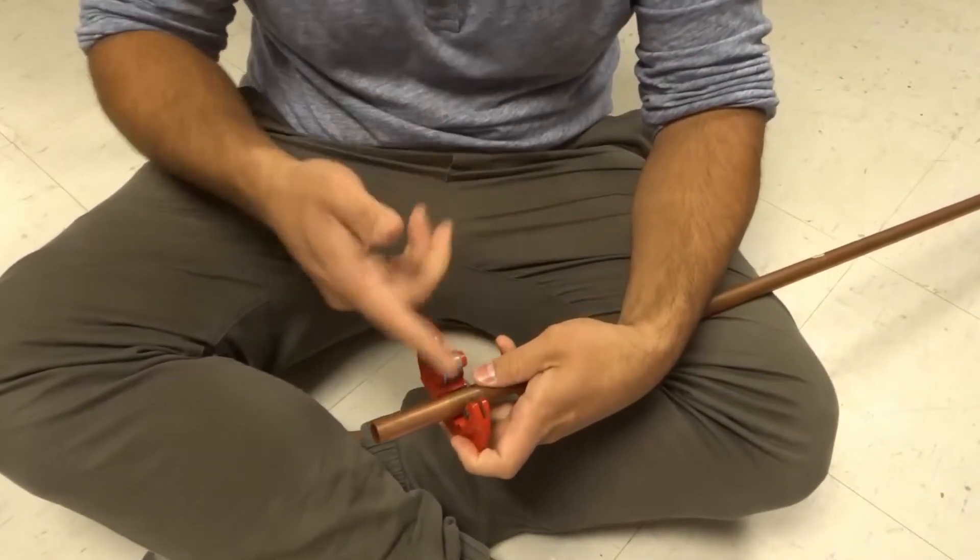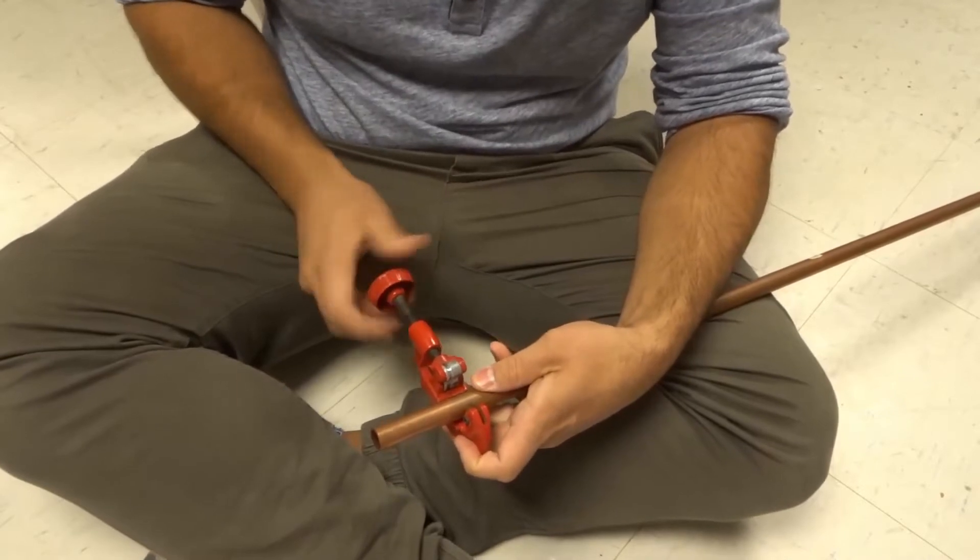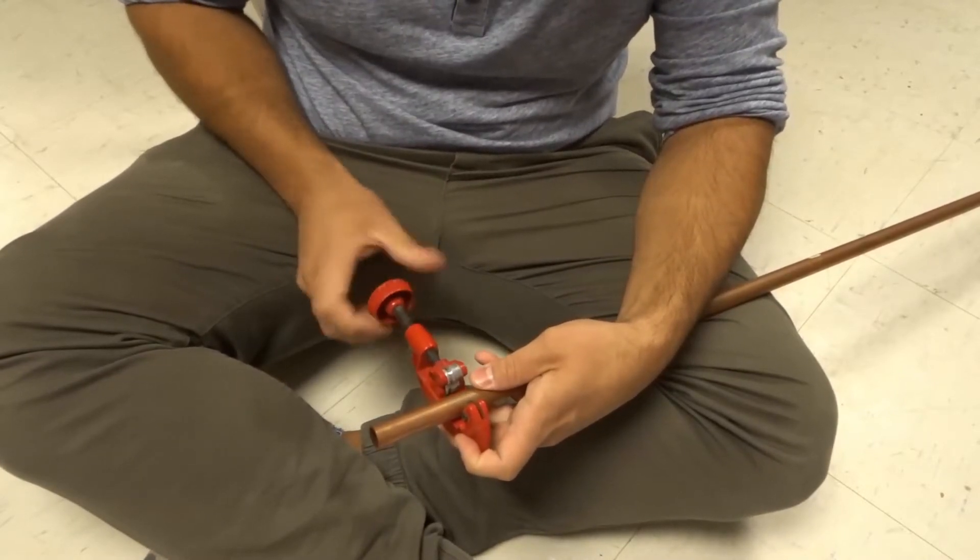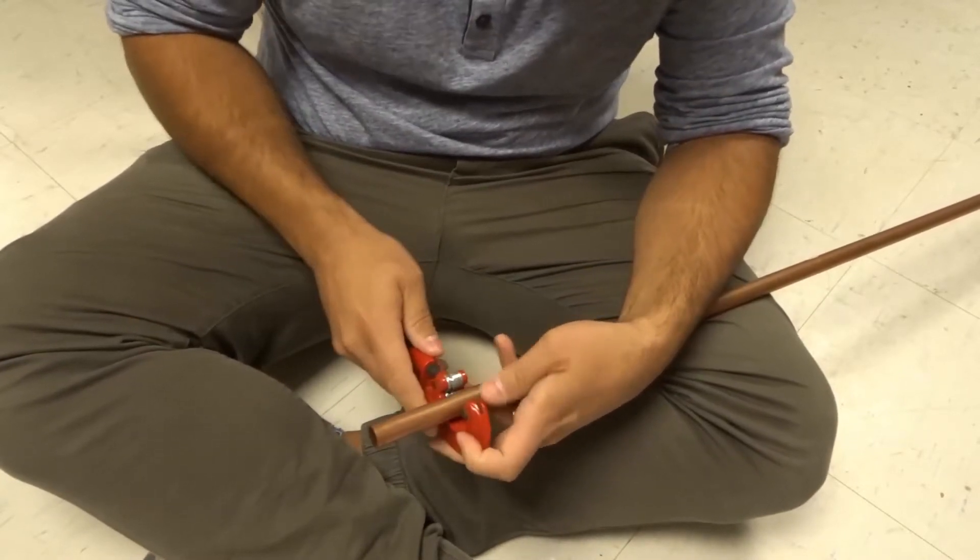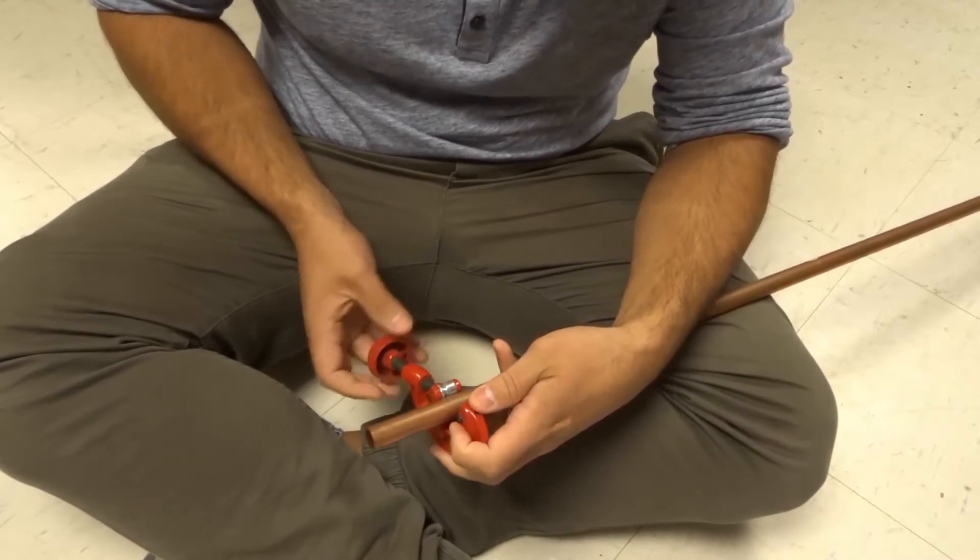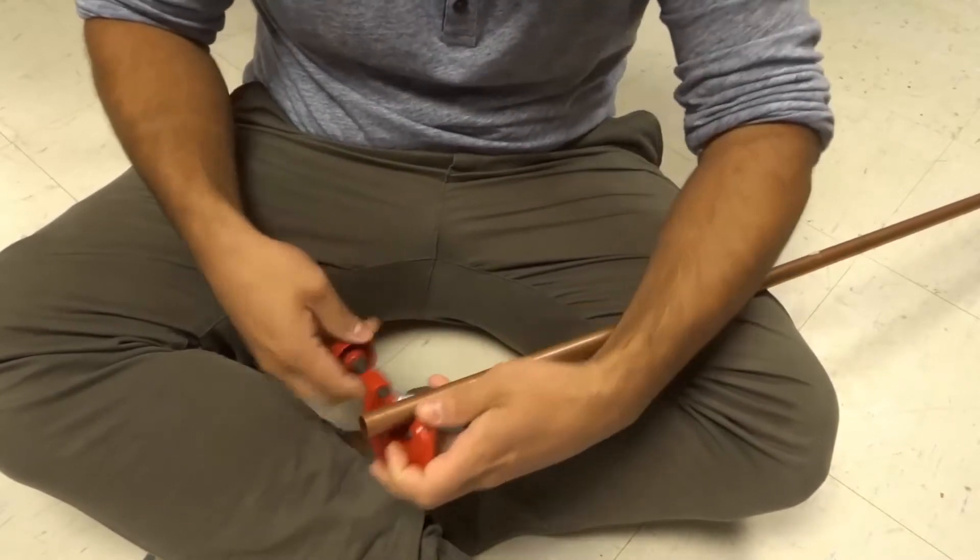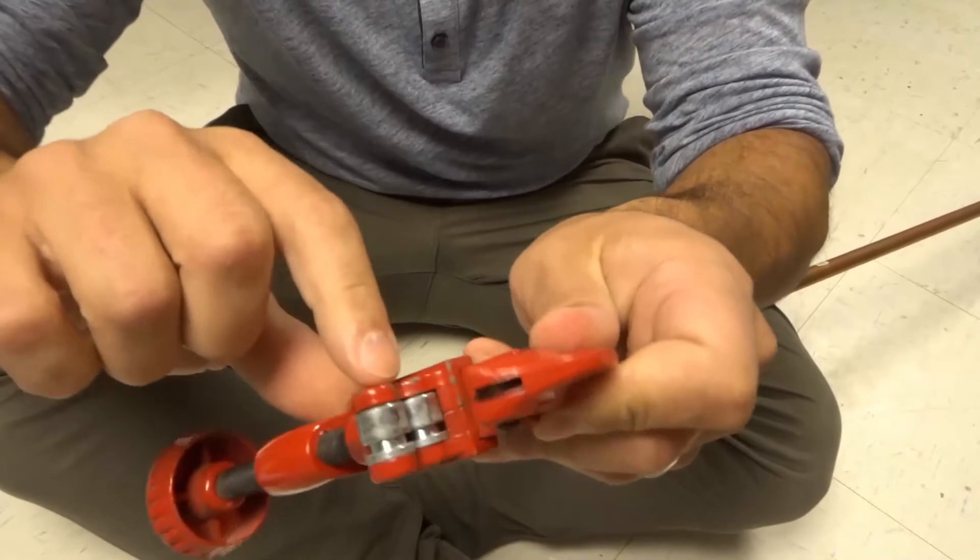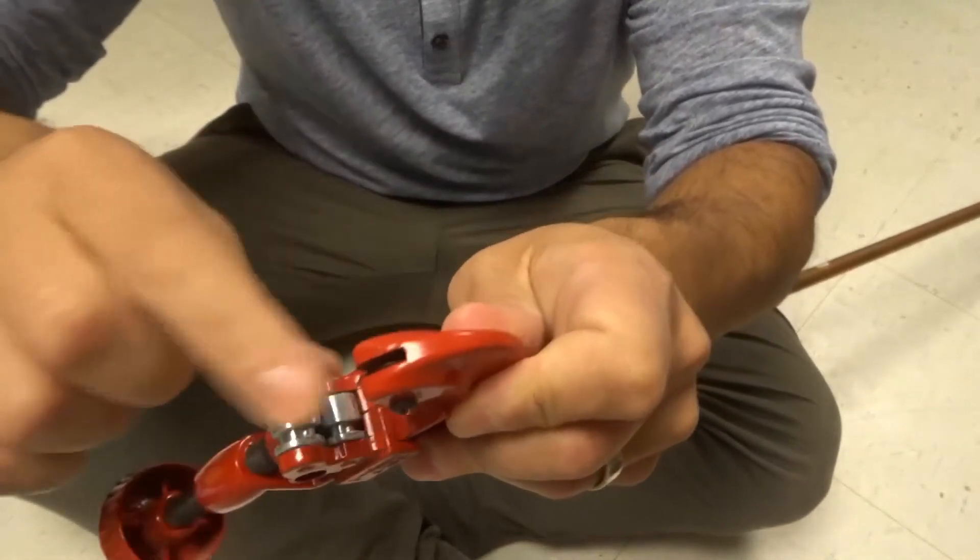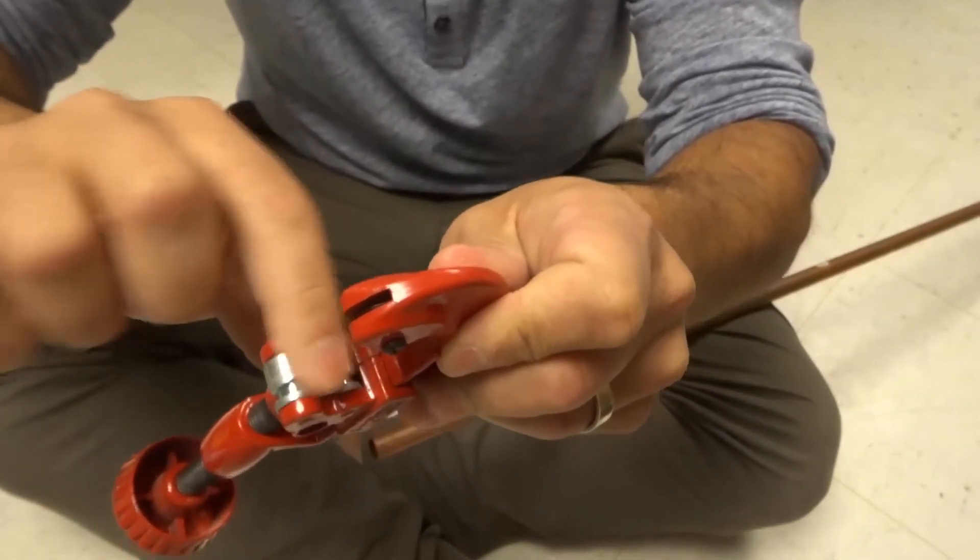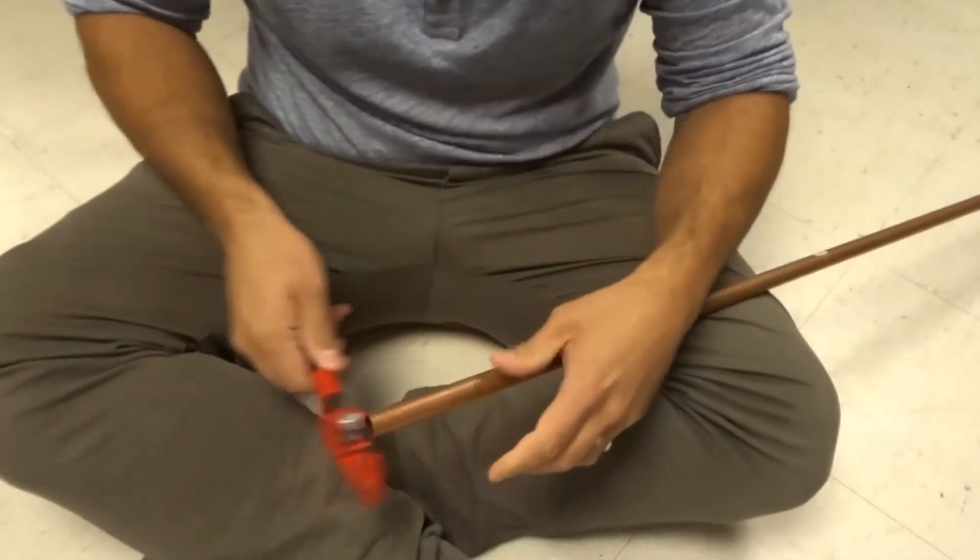Put the pipe cutter on the spot that you want to cut and you want to twist it so that it is just a little bit tight around the pipe itself. The pipe is sitting right here between these two rollers and then against the blade, so it's resting between the rollers and then against the blade.